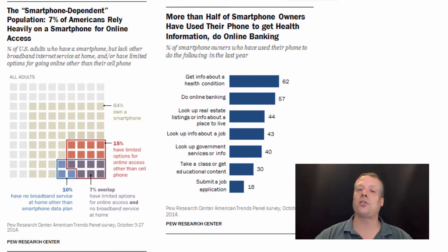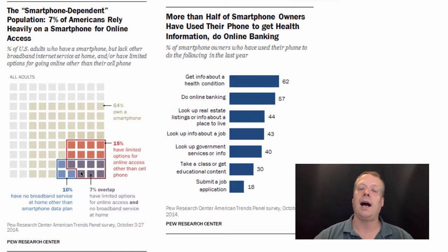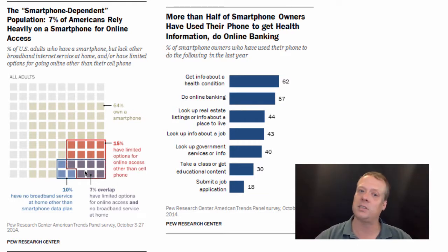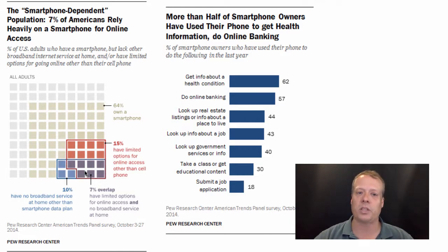Moreover, there's an increasing number of people in the U.S. that are becoming smartphone-dependent — relying almost exclusively on their smartphones for broadband access. They either have no broadband service at home other than their smartphone data plan, or have limited options for online access other than the cell phone. As a result, 7% of the U.S. population relies heavily on a smartphone for all of its internet access. So a large proportion of the U.S. is really using smartphones as their main internet source.